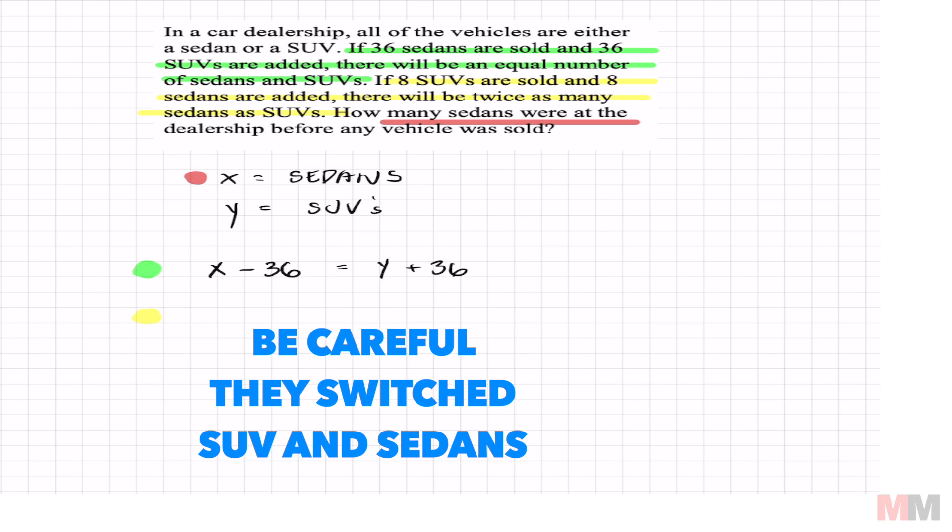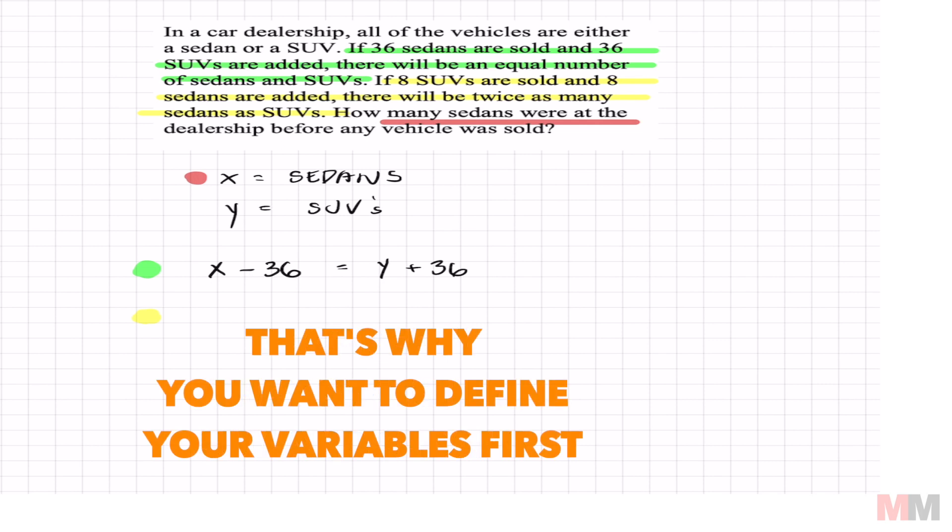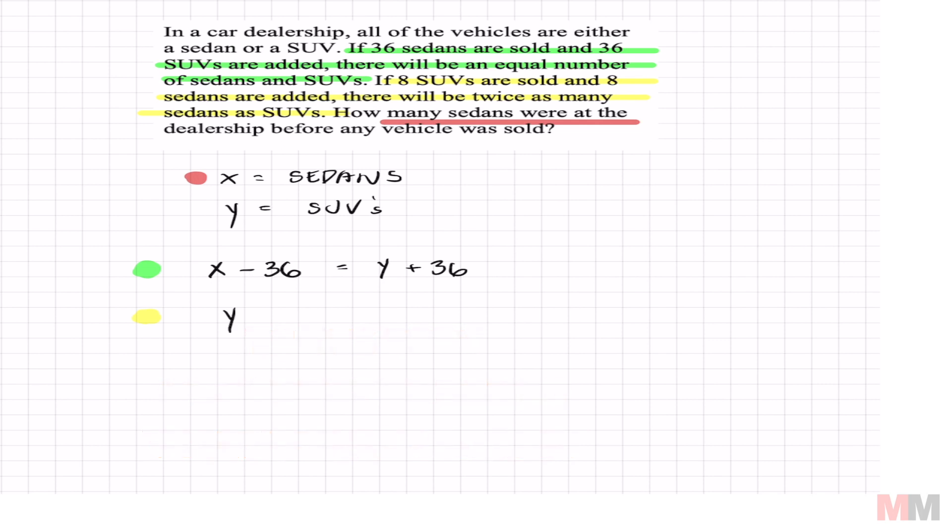Moving on to the yellow. If eight SUVs are sold, so we'll focus on that. Eight SUVs are sold. Whatever my SUV amount is, y, and I sold eight, minus eight. And eight sedans are added. So whatever my sedan amount is, x, and I add eight.